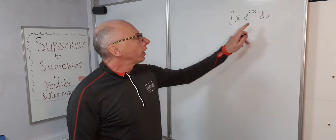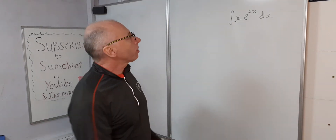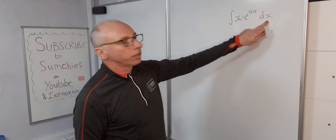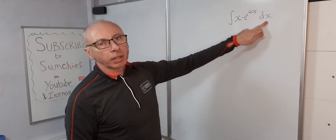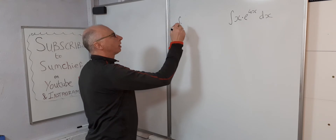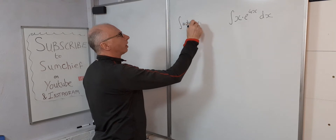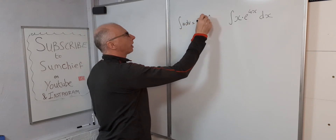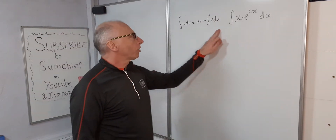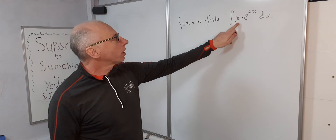I'm looking to do this integral: the integral of x times e to the 4x dx. Since we've got two terms, an x and e to the 4x, we're going to need to do integration by parts. Integration by parts is done like this: integral of u dv equals u·v minus the integral of v times du. That's our basic formula for integration by parts.